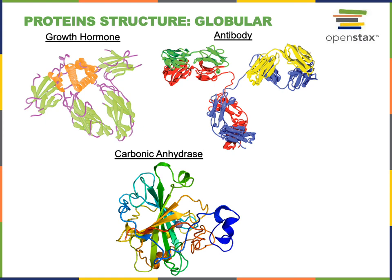At the bottom here we see carbonic anhydrase, an example of an enzyme. Enzymes are typically proteins, although they can be other molecules such as nucleic acids, but most enzymes are proteins. Enzymes are biological catalysts — that is, enzymes speed up chemical reactions by lowering the activation energy. The chemical reaction catalyzed by carbonic anhydrase is the interconversion of carbon dioxide and water with carbonic acid. Carbon dioxide and water can be converted into carbonic acid, but this is a reversible reaction, so carbonic acid can also be converted back into carbon dioxide and water.